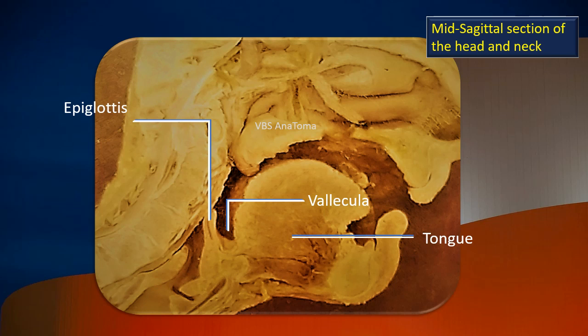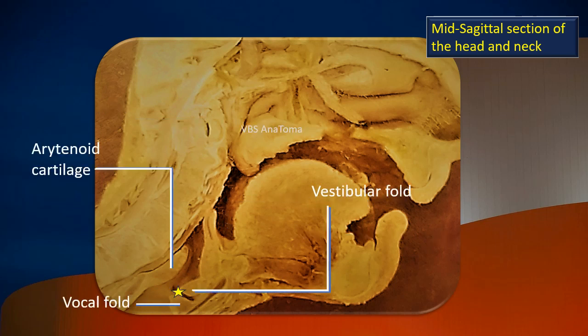That is the glossoepiglottic fold — the median glossoepiglottic fold. The cavity on either side is the vallecula. You can see the tongue has been labeled and the epiglottis has been labeled; in between the two, the fold of mucosa is the glossoepiglottic fold. Also seen in this midsagittal section are the vestibular fold and the vocal fold, with a yellow star marking the location of the ventricle of the larynx. More posteriorly, the arytenoid cartilage is also visible.